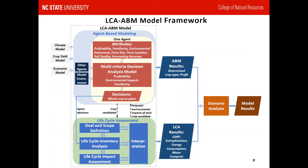This is our framework. It contains two main modules: the ABM module and the LCA module. Before decision-making, the ABM module will send the crop candidates' information to the LCA module, and then the LCA module will determine the potential environmental impacts of each crop candidate, then send back to ABM. In the decision-making process, the agent will use all the information to determine which crop to cultivate. After the decision-making, the final decision of each farm is sent to the LCA module to evaluate the final environmental impacts. Then the ABM module and LCA module will output their results respectively.